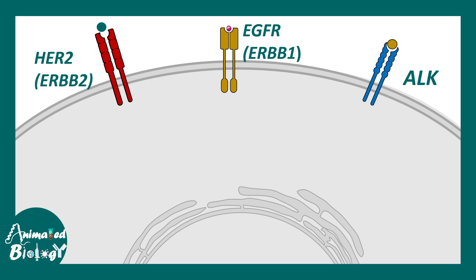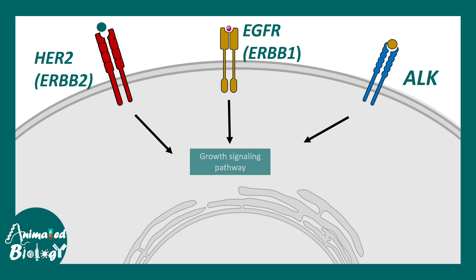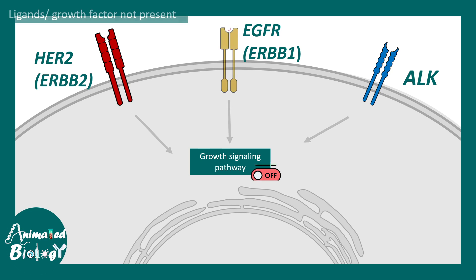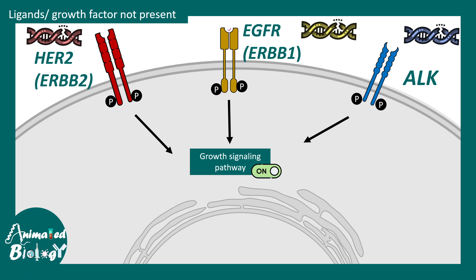At the receptor level, receptors like ERBB1 and ERBB2 — which are EGFRs — are receptor tyrosine kinases that normally bind a ligand, become phosphorylated, and initiate growth and signaling pathways. Without mitogen or growth factors, the pathway should be shut off. However, in oncogenic mutations where proto-oncogenes turn into oncogenes, the receptors remain phosphorylated regardless of whether ligands or mitogens are present — they are always in an active state by default — leading to uncontrolled growth and cancer development.